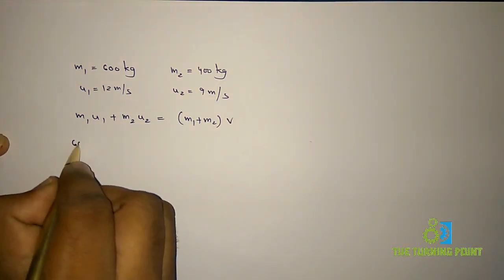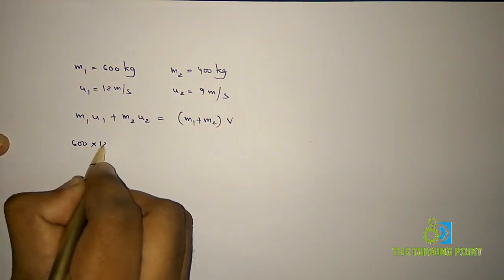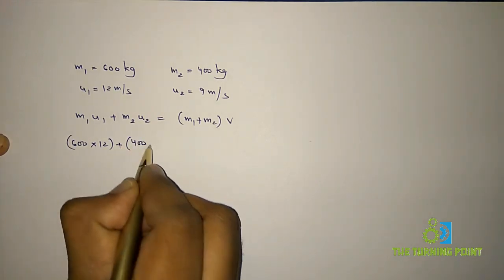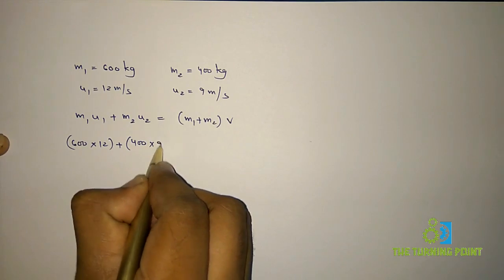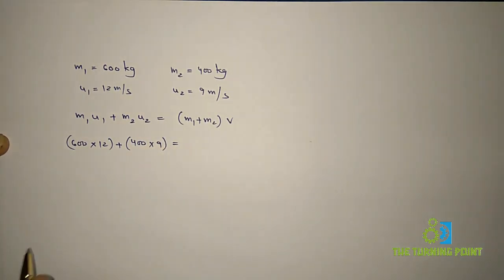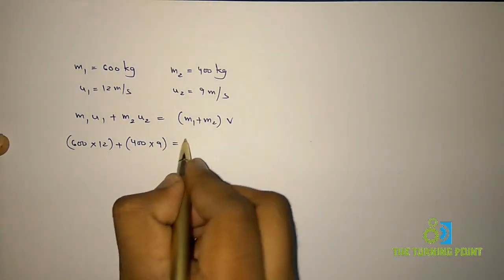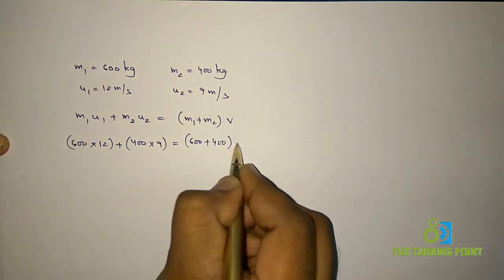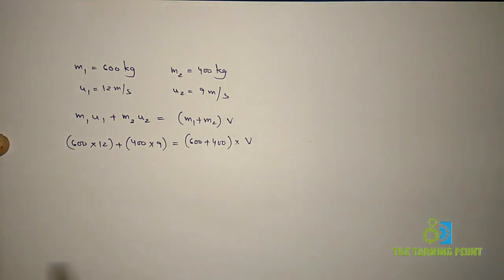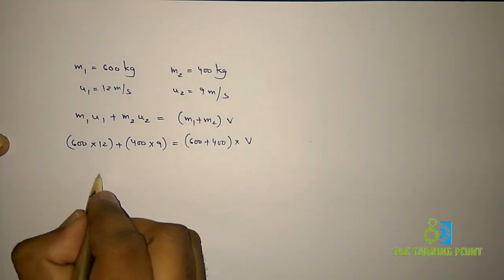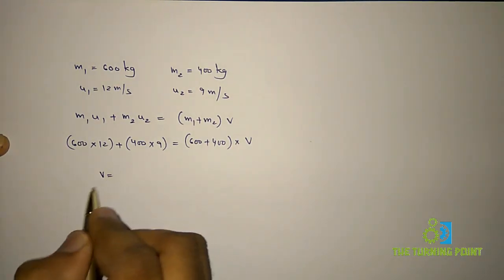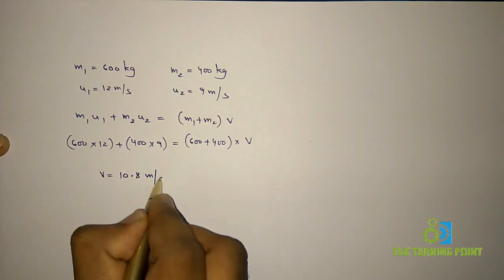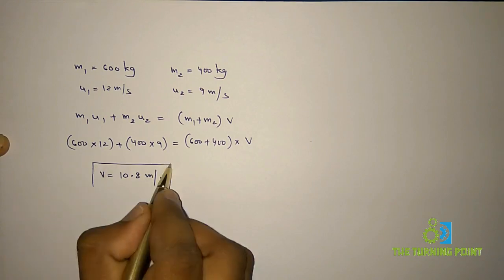Substituting the values: 600 × 12 + 400 × 9 = (600 + 400) × v. Simplifying, we get v = 10.8 m/s. This is the common velocity with which both vehicles will move after impact.